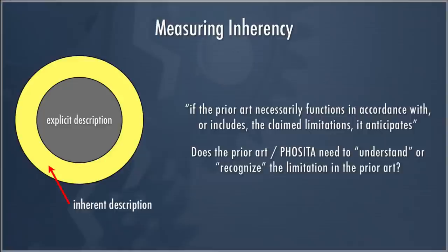This is logical: if we required a person of ordinary skill in the art to recognize the inherent description, then inherency wouldn't be any more than just express description. Instead, inherency adds disclosure by saying that anything necessarily present is also part of the prior art and can be used to reject a patent for anticipation and indeed obviousness purposes.